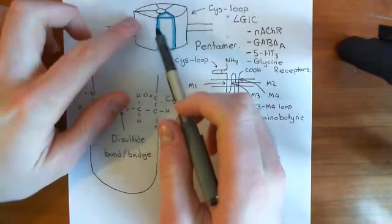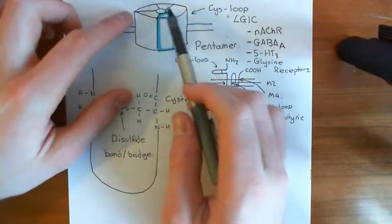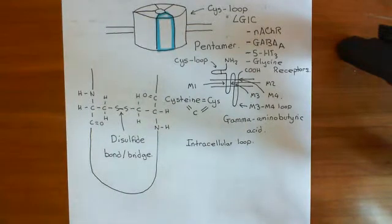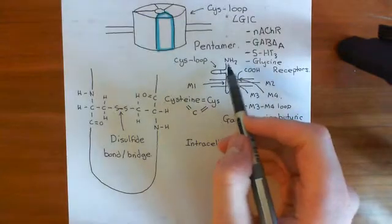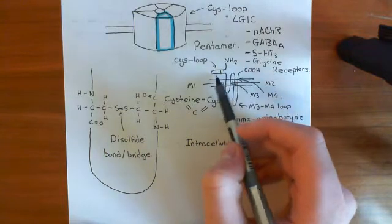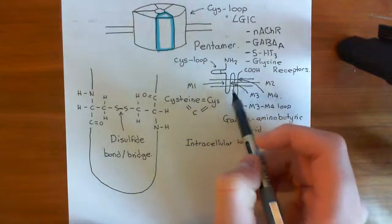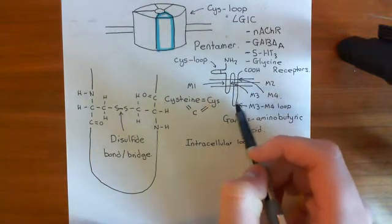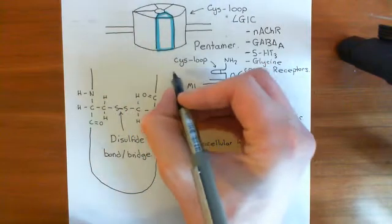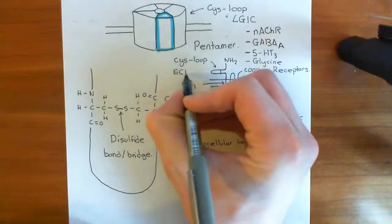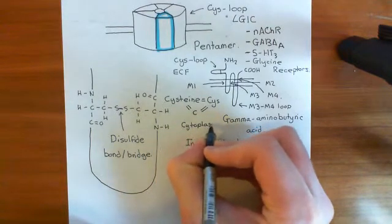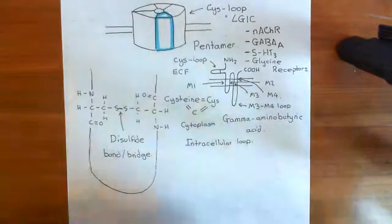Firstly, they have this pentameric structure where the entire receptor is made up of five separate subunits coming together. Secondly, if you look at the membrane-spanning topology of one of these subunits, the amino-terminus and the carboxy-terminus are both extracellular. You then have this cis-loop, followed by four membrane-spanning alpha helices with a large loop intracellularly between M3 and M4. The extracellular face is on one side, with the cytoplasm on the other.